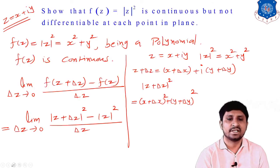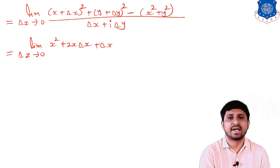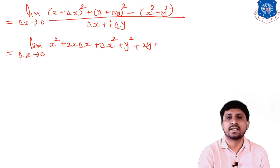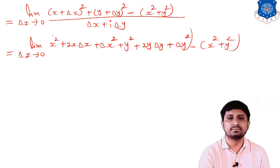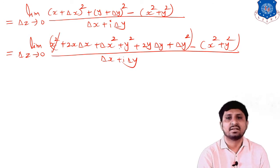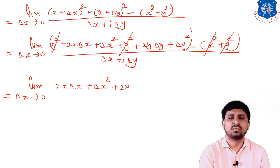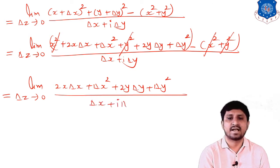Simplifying: expanding the numerator gives x² + 2x·δx + (δx)² + y² + 2y·δy + (δy)² − x² − y², all over δx + i·δy. The x² and y² terms cancel, leaving the limit as δz → 0 of [2x·δx + (δx)² + 2y·δy + (δy)²] / (δx + i·δy).